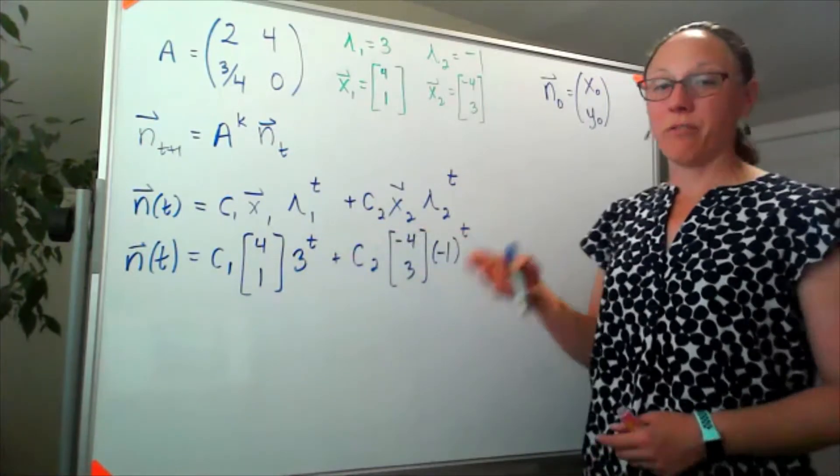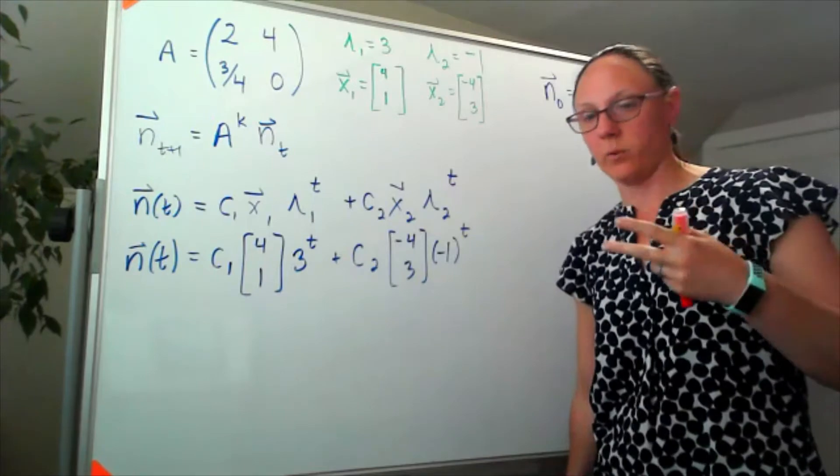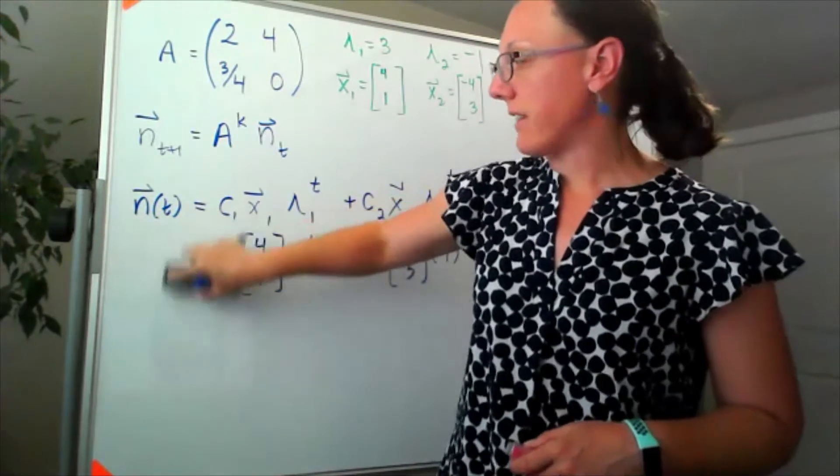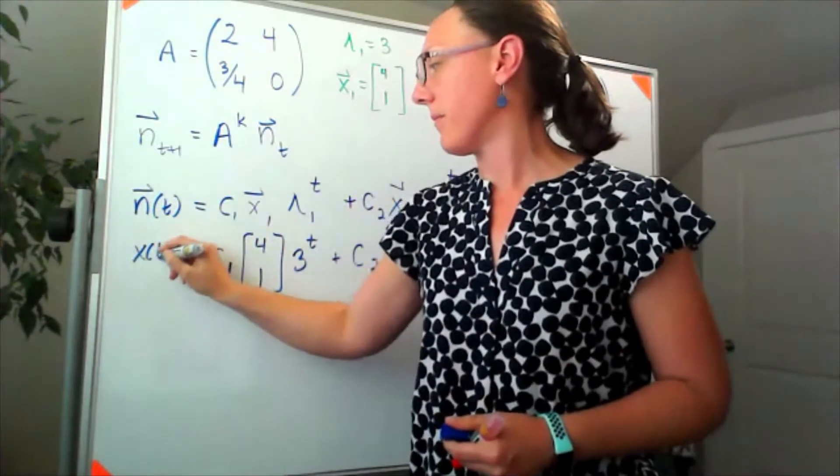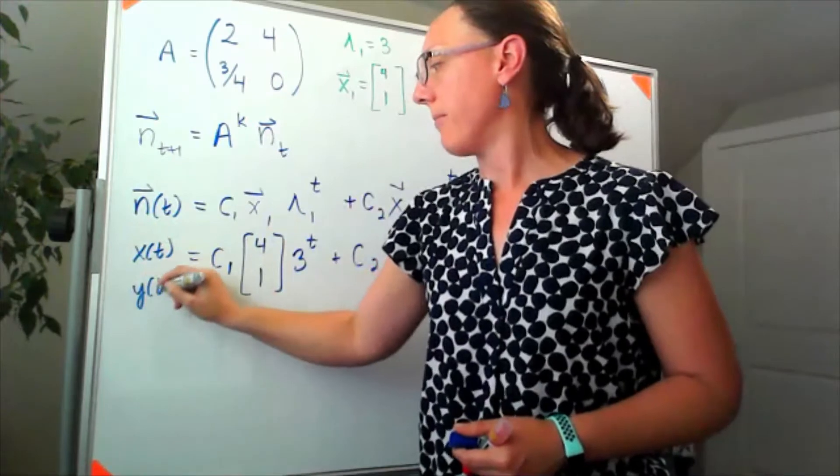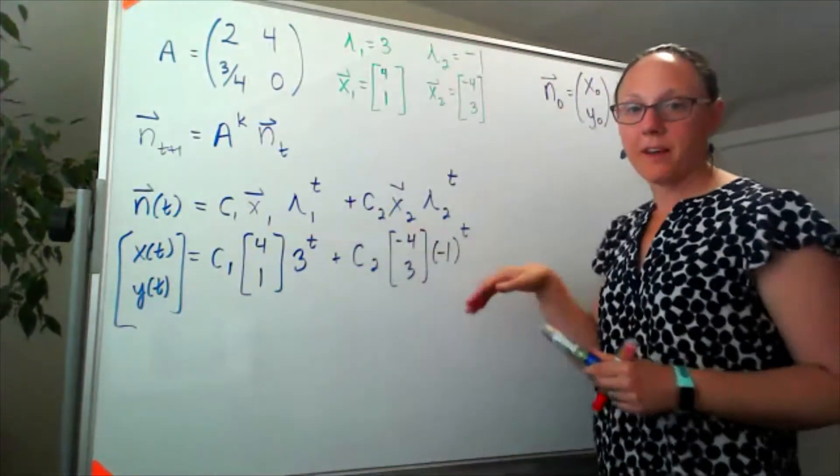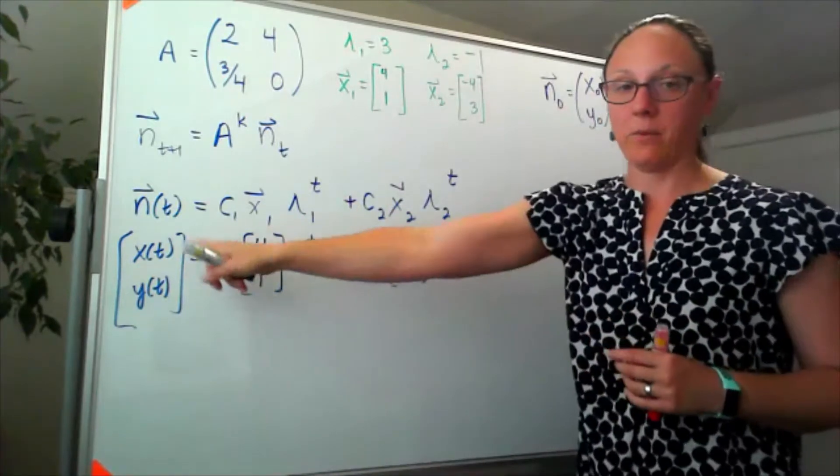This, although we've written it as a single equation, is secretly two equations because remembering that this is a vector, this actually is saying that if I multiply this out, we kind of have two rows over here and we definitely have two rows over there.